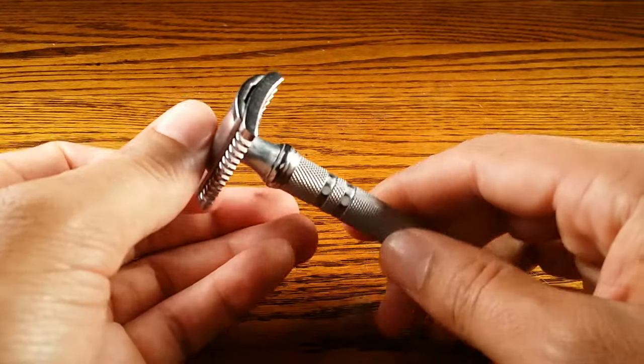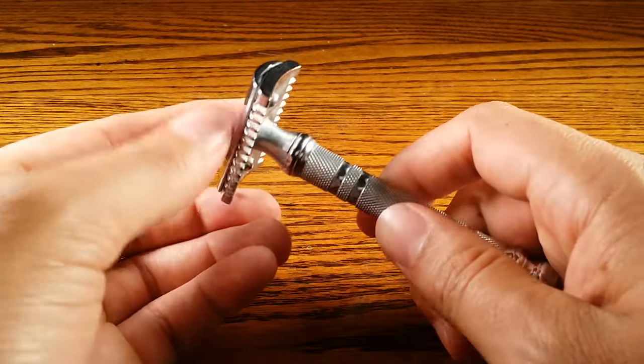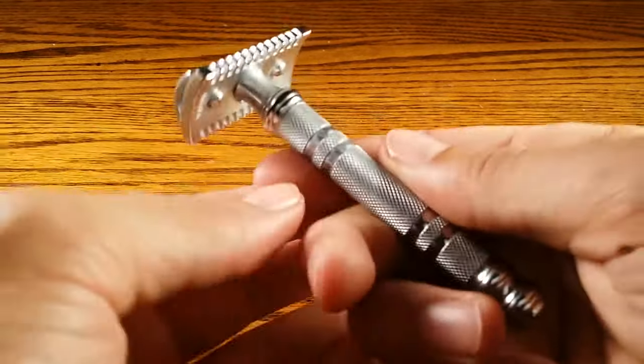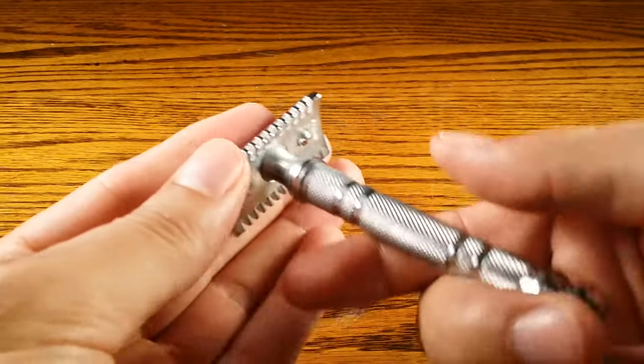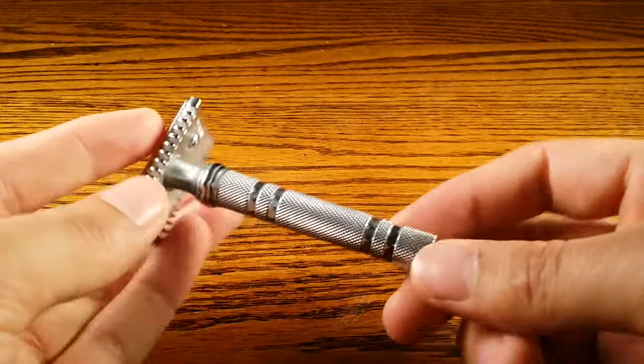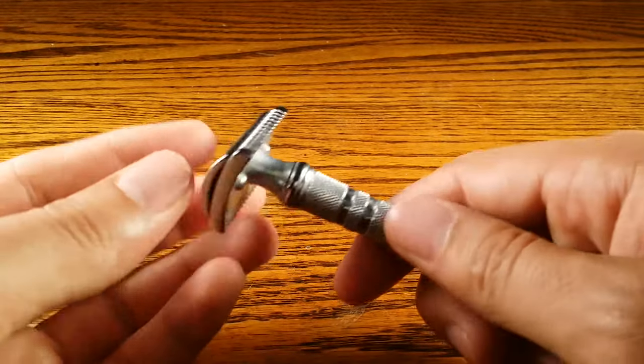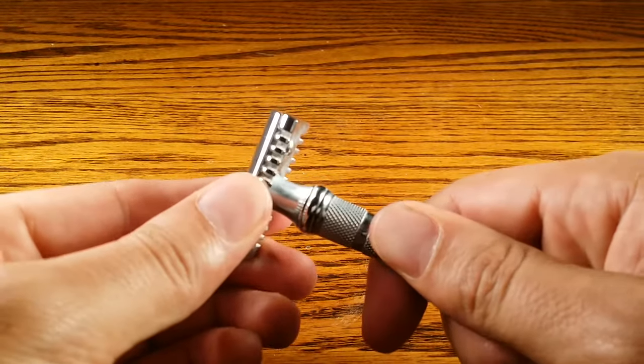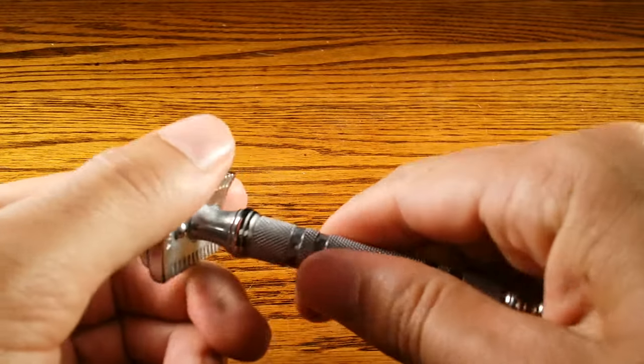So let's start off with the weight and the balance. It weighs 3.3 ounces, which is pretty heavy. Most of the weight is in the handle. It has a brass frame. The head doesn't weigh too much, but it's definitely handle heavy.